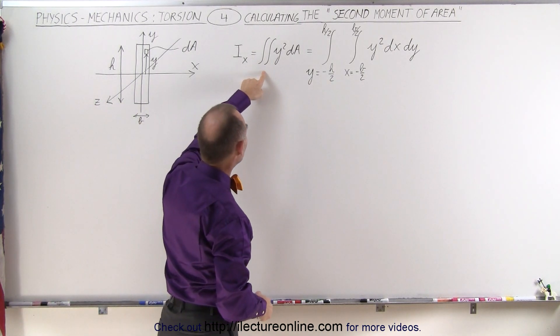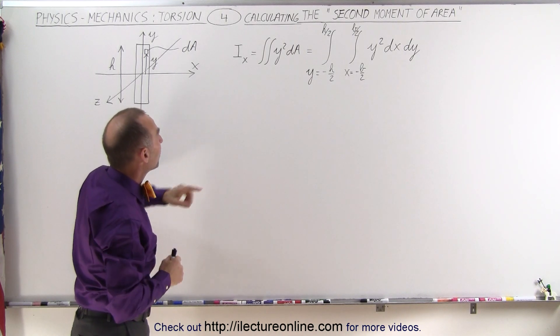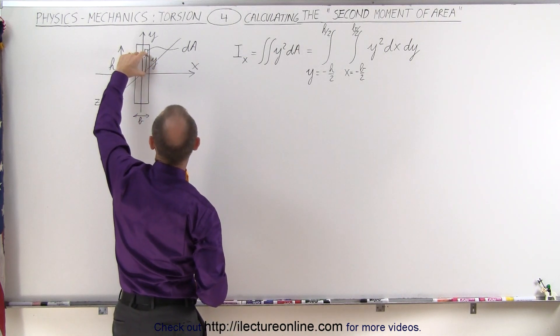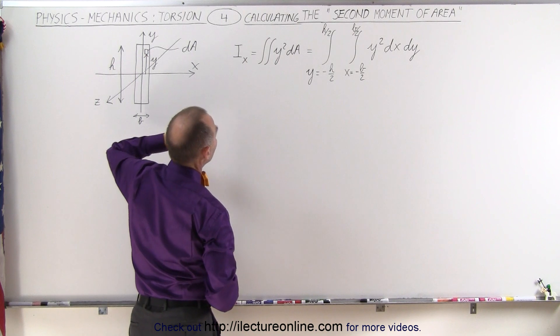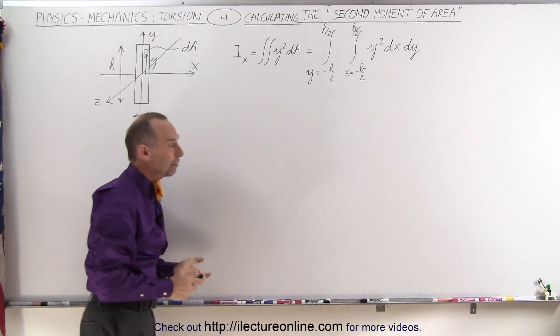It's equal to the double integral because we have to integrate over the x-direction and over the y-direction, multiplied times y-squared, which is the distance from the x-axis to any small segment of the cross-sectional area. And that will give us what we call the second moment of area relative to the x-axis.